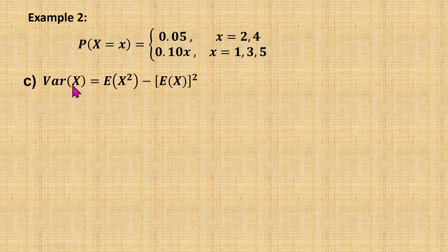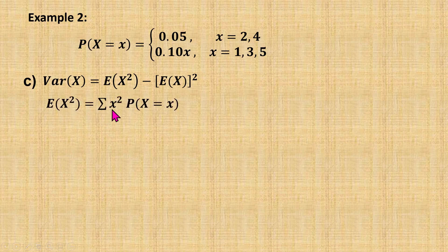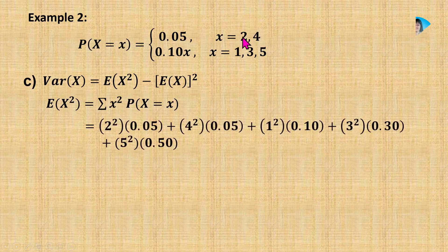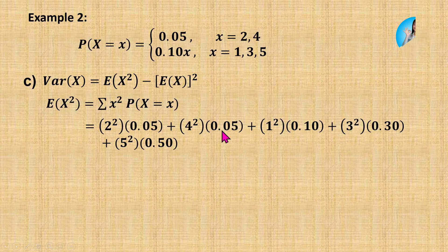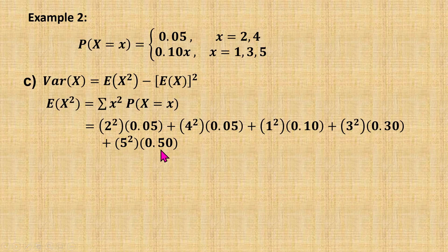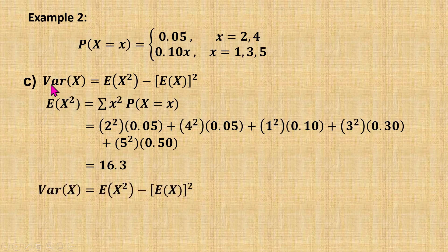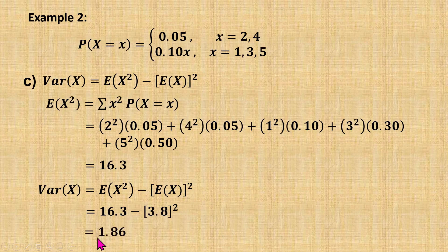Next, we find the variance. To find the variance, we must first find E(X squared), which equals the sum of X squared times the probability. When X is 2: 2 squared times 0.05. When X is 4: 4 squared times 0.05. When X is 1: 1 squared times 0.1. When X is 3: 3 squared times 0.3. When X is 5: 5 squared times 0.5. So E(X squared) equals 16.3. Therefore, variance of X equals 16.3 minus 3.8 squared, which gives 1.86.